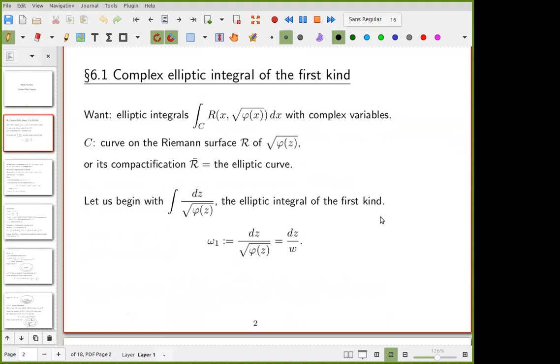The definition is the same. This is the elliptic integral: R is some rational function and phi is a polynomial of degree 3 or 4 with no multiple roots. What is important here is that we are considering on the Riemann surface of phi.